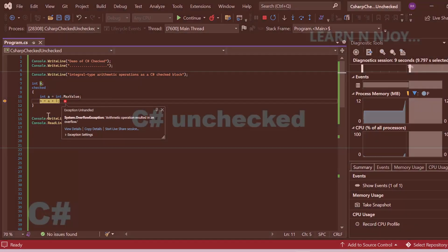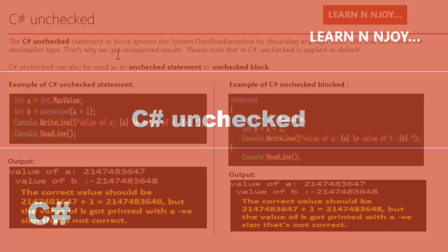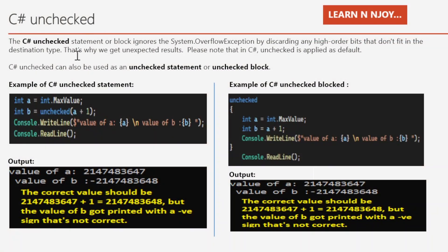Now, C# unchecked. The C# unchecked statement or block ignores the System.OverflowException by discarding any high-order bits that don't fit in the destination type — that's why we get unexpected results. Please note that in C#, unchecked is applied as the default even if we don't explicitly mention it. C# unchecked can be used as an unchecked statement or an unchecked block.